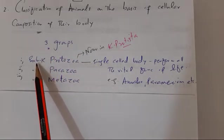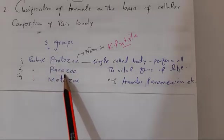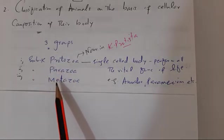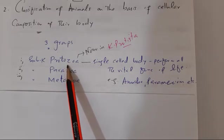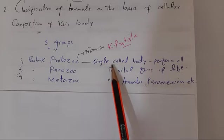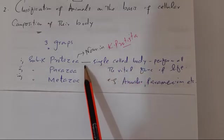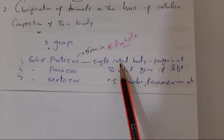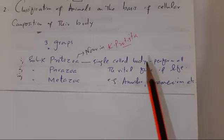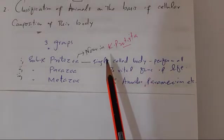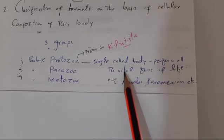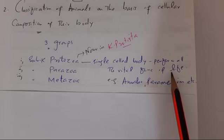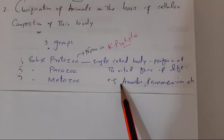On the basis of cellular composition of their body, animals are classified into three groups: sub-kingdom Protozoa, sub-kingdom Parazoa, and sub-kingdom Metazoa. Sub-kingdom Protozoa includes single-celled or unicellular animals. These animals have a single-celled body, and their single cell performs all the vital functions of life — digestion, excretion, reproduction, etc.